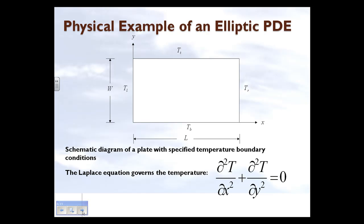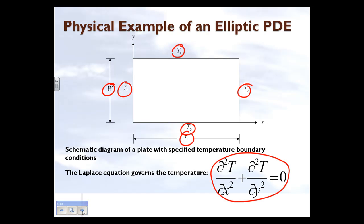Let's look at a physical example of an elliptic partial differential equation. Here we have a plate of length l and width w. It is maintained at four different temperatures on the four different edges of this rectangle, and the equation which governs the temperature is given by this Laplacian equation. The temperature inside the plate at steady state, as a function of x and y, will be determined by solving this second order linear partial differential equation. Now let's see how we can do that numerically.